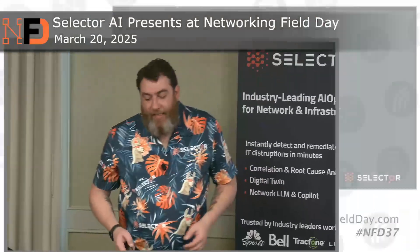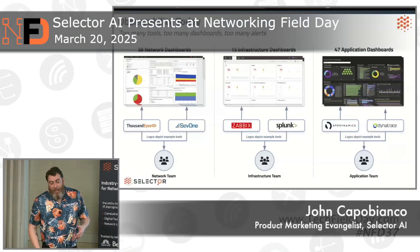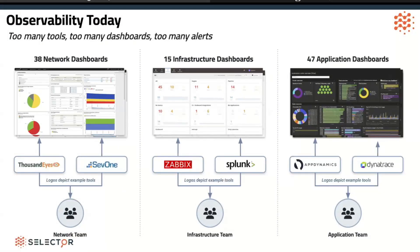A significant amount about root cause analysis and AI agents. This is some research we did: the average network engineer is looking at 38 dashboards, the average infrastructure engineer is looking at 15 dashboards, and applications are up to almost 50 dashboards. If you think of a full stack developer, now you're looking at close to 75 dashboards. Too many tools, too many dashboards, too many alerts.